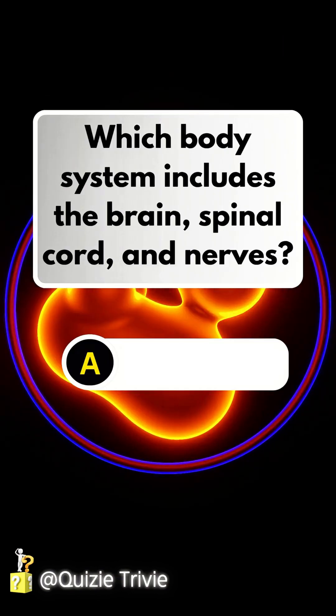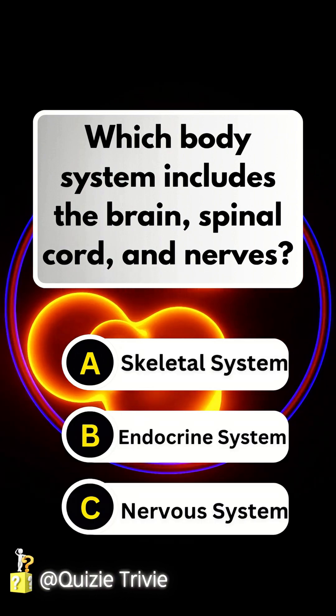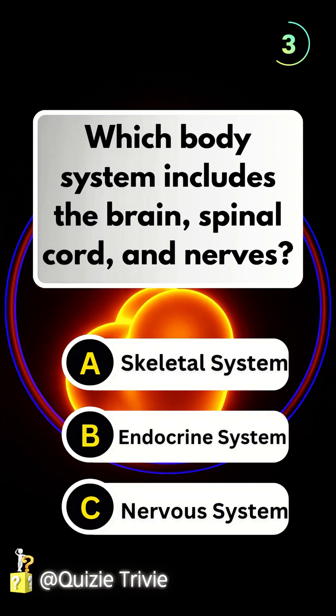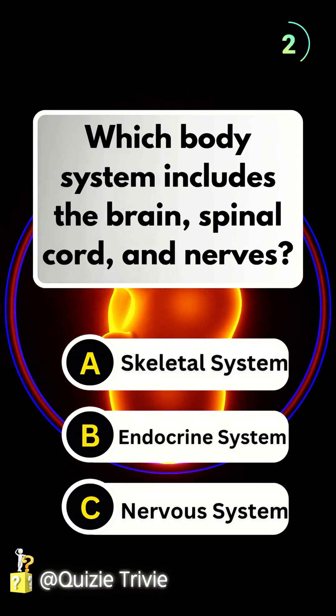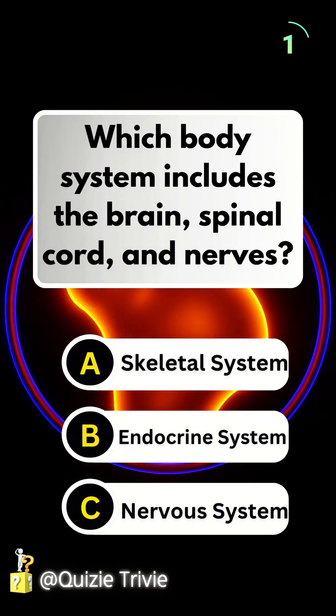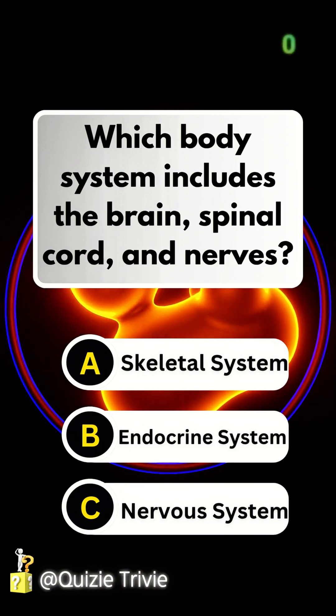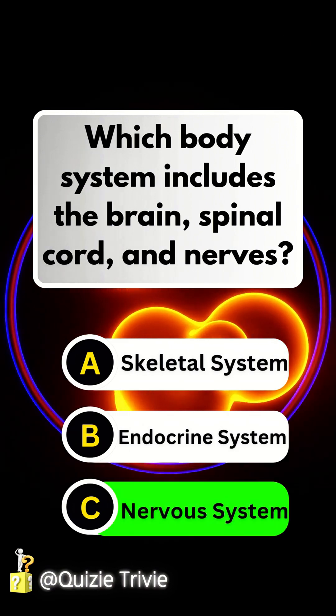Which body system includes the brain, spinal cord, and nerves? Nervous system.